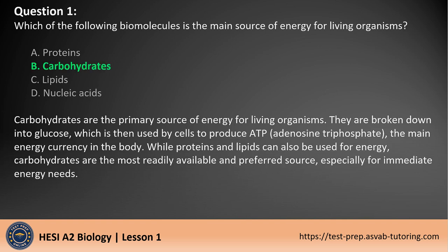The answer is B. Carbohydrates are the primary source of energy for living organisms. They are broken down into glucose, which is then used by cells to produce ATP (adenosine triphosphate), the main energy currency in the body. While proteins and lipids can also be used for energy, carbohydrates are the most readily available and preferred source, especially for immediate energy needs.